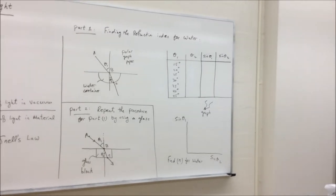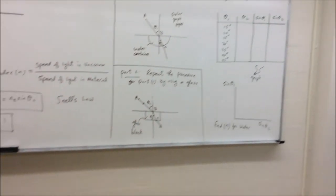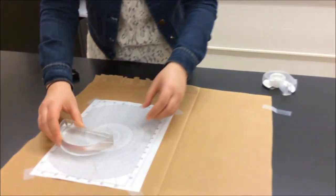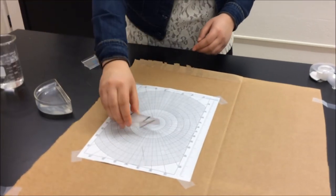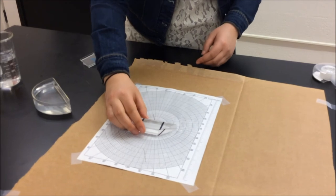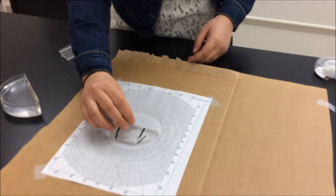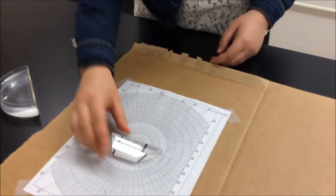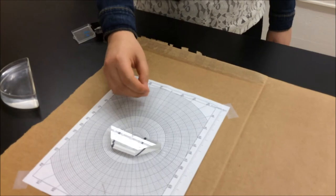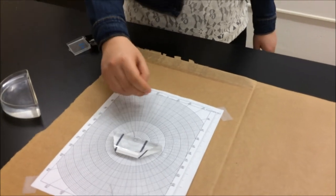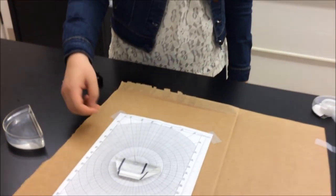After you're done with part 1, move on to part 2 of the experiment, where you replace the container filled with water with glass. Place the glass exactly where the container of water was and repeat the experiment with incident angles of 15, 20, all the way up to 45 degrees.